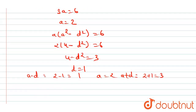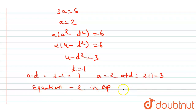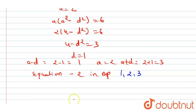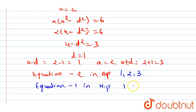So the three roots of equation two in AP are 1, 2, and 3. Since the roots of equation one are in HP, they are the reciprocals: 1, 1/2, and 1/3. This is our answer. Thank you.